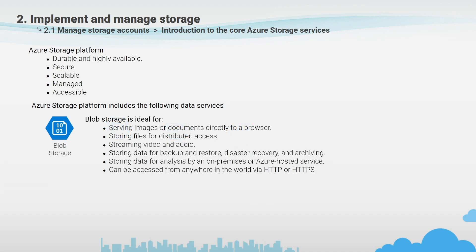Azure Blob is an object storage solution for the cloud optimized for storing massive amounts of unstructured data, such as text or binary data. It is ideal for serving images or documents directly to a browser, storing files for distributed access, streaming video and audio, and storing data for backup and restore disaster recovery. Objects in Blob storage can be accessed from anywhere in the world via HTTP or HTTPS, and an API is also applicable to work with the storage account.